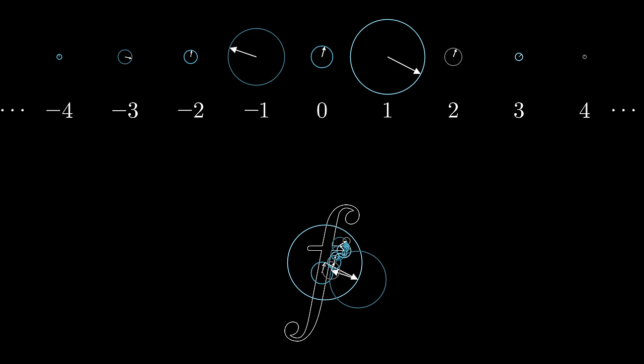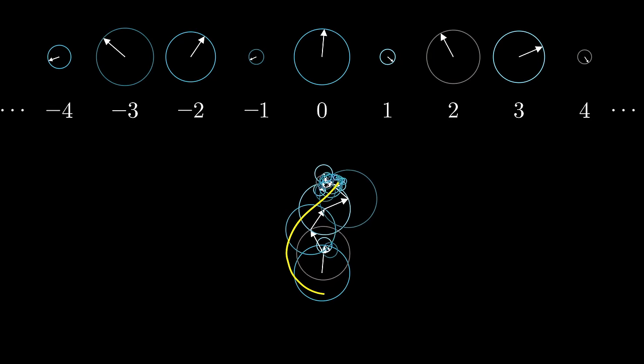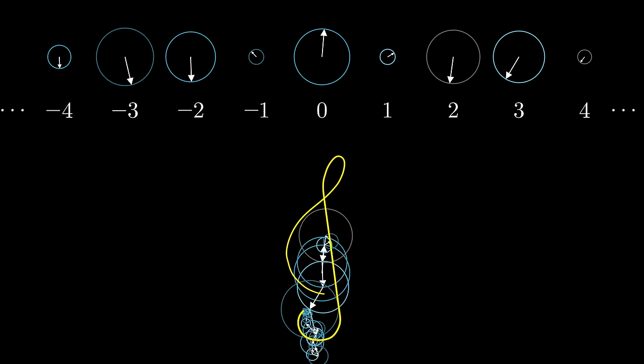What's mind-blowing is that just by tweaking the initial size and angle of each vector, that gives you enough control to approximate any curve that you want.